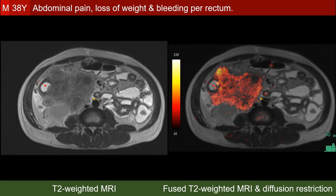MRI has been performed for further characterization of the lesion. Here we see the transverse T2-weighted images, and on the right-hand side, a fused image showing the calculated diffusion restriction overlaid on the T2-weighted images. We have two striking features: the very low signal intensity of the lesion on T2-weighted images and the marked diffusion restriction of the lesion, which is both mucosal and retroperitoneal.